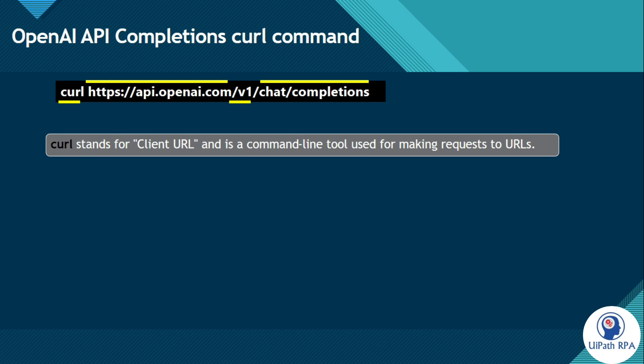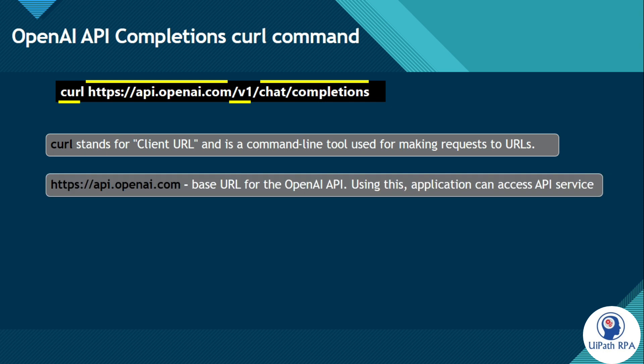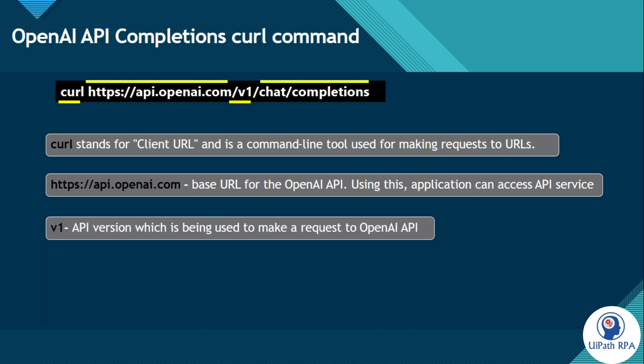Now what is this URL? To which URL? To api.openai.com — this URL. This is the base URL for the OpenAI API, and using this, applications can access the API service. Now what is v1? Whenever we see v1 or a version number, it means this is the version. So v1 is the API version which is being used to make a request to the OpenAI API.